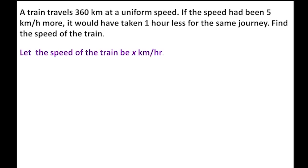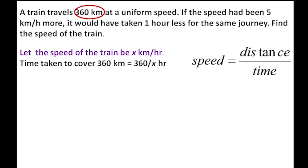Let the speed of the train be x kilometers per hour. We have to find the speed of the train covering the same distance. The formula is speed equals distance by time. Distance is 360 kilometers and speed is x kilometers per hour, so time taken to cover 360 kilometers is 360 by x hours.